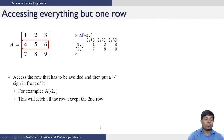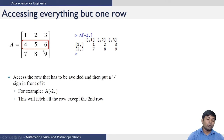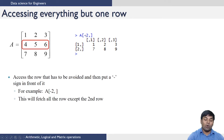Similarly you can also access everything but one row. For example if you want to exclude row 2 and keep all columns, you use A[-2,] and assign it back to A. When you do this command you will see that 1, 2, 3 and 7, 8, 9 are printed as your output.